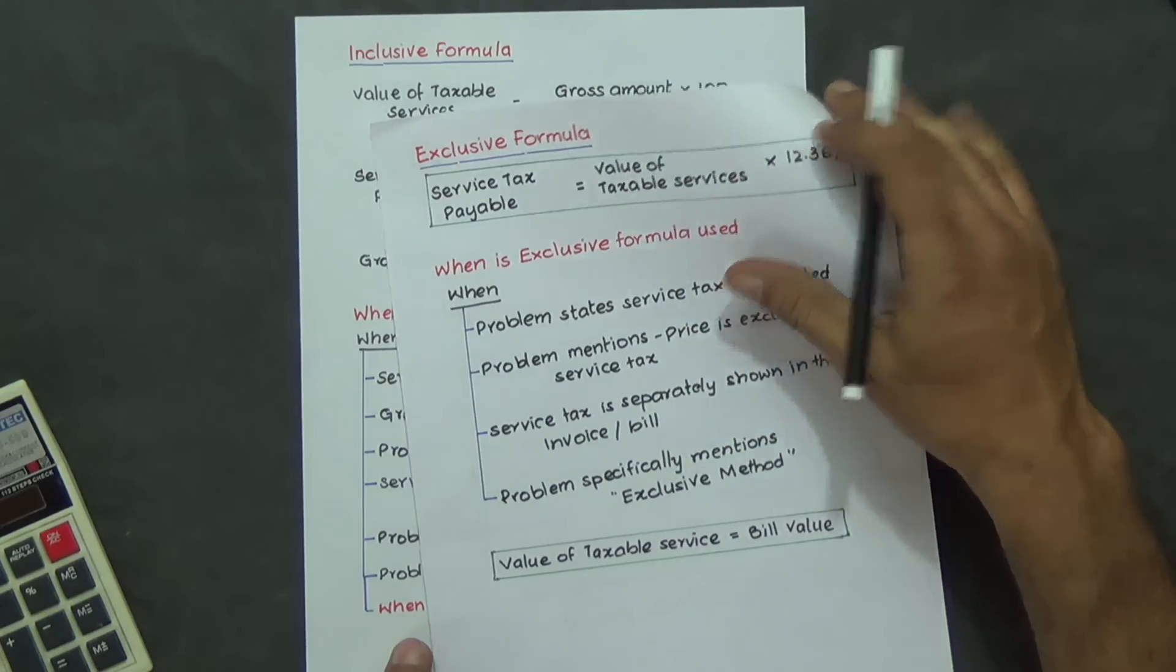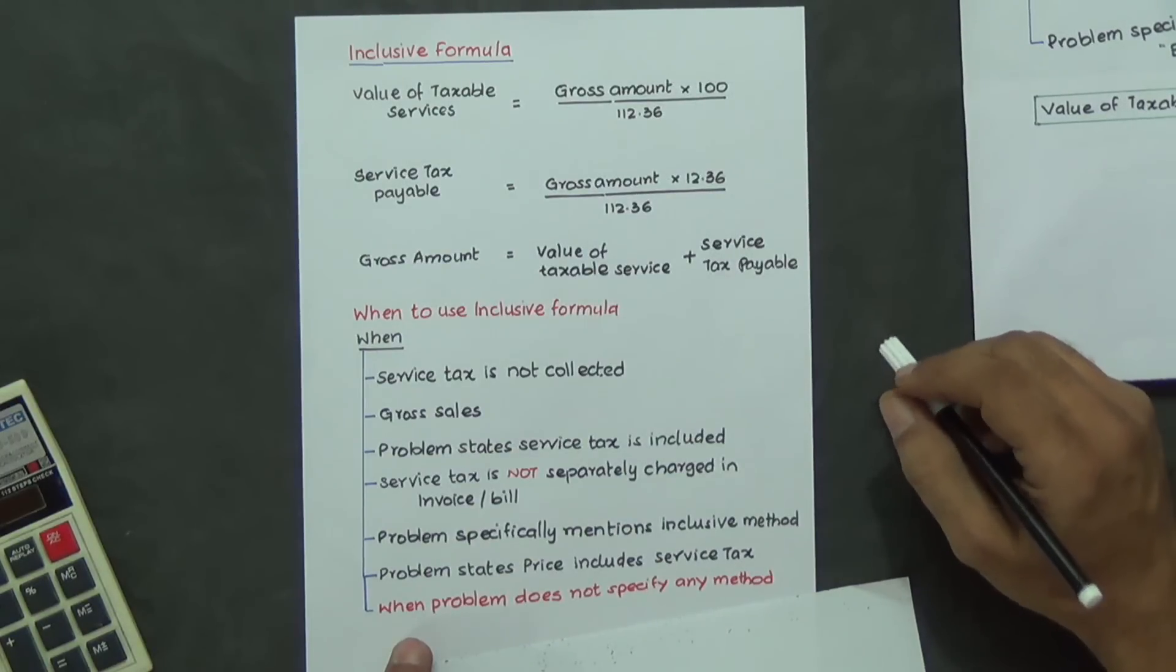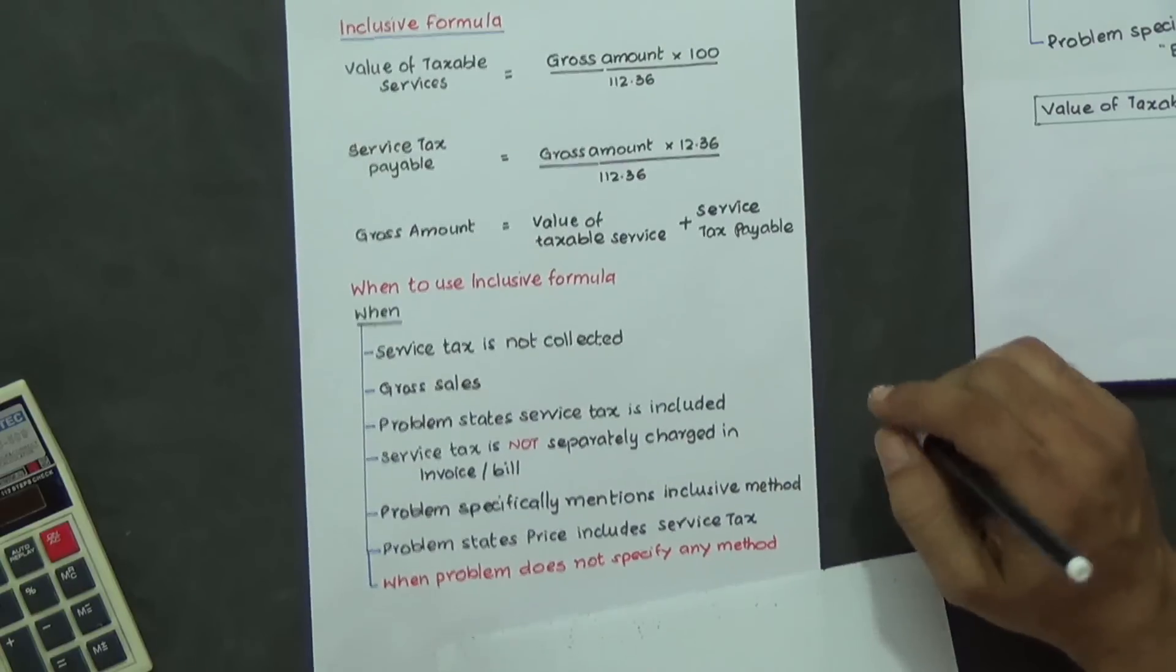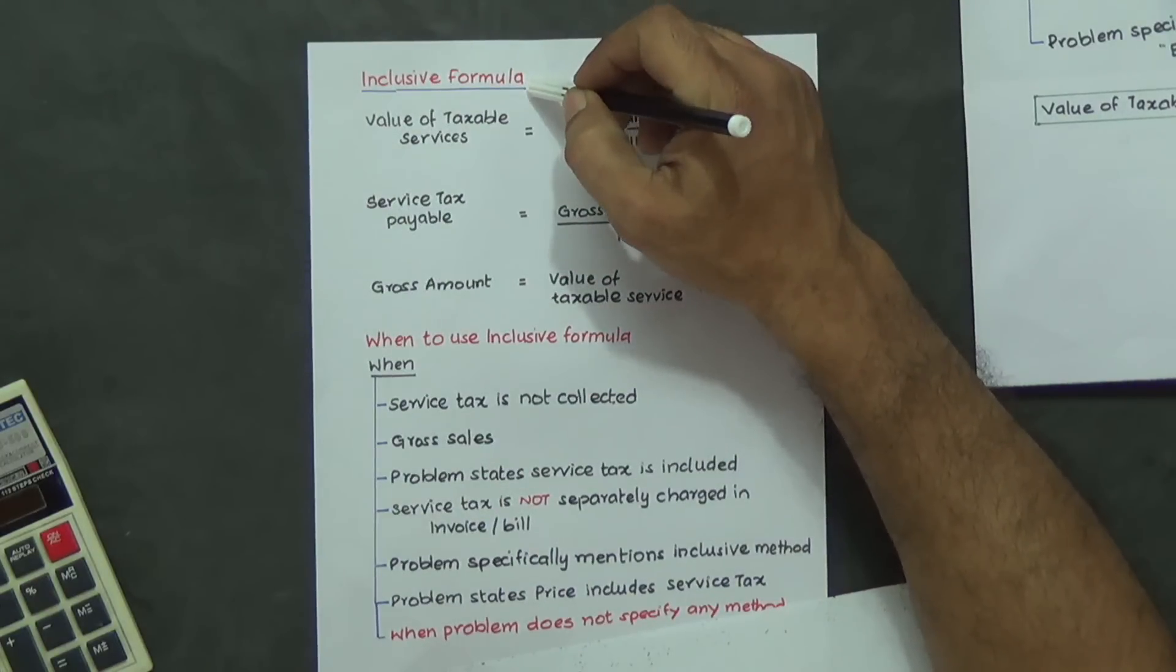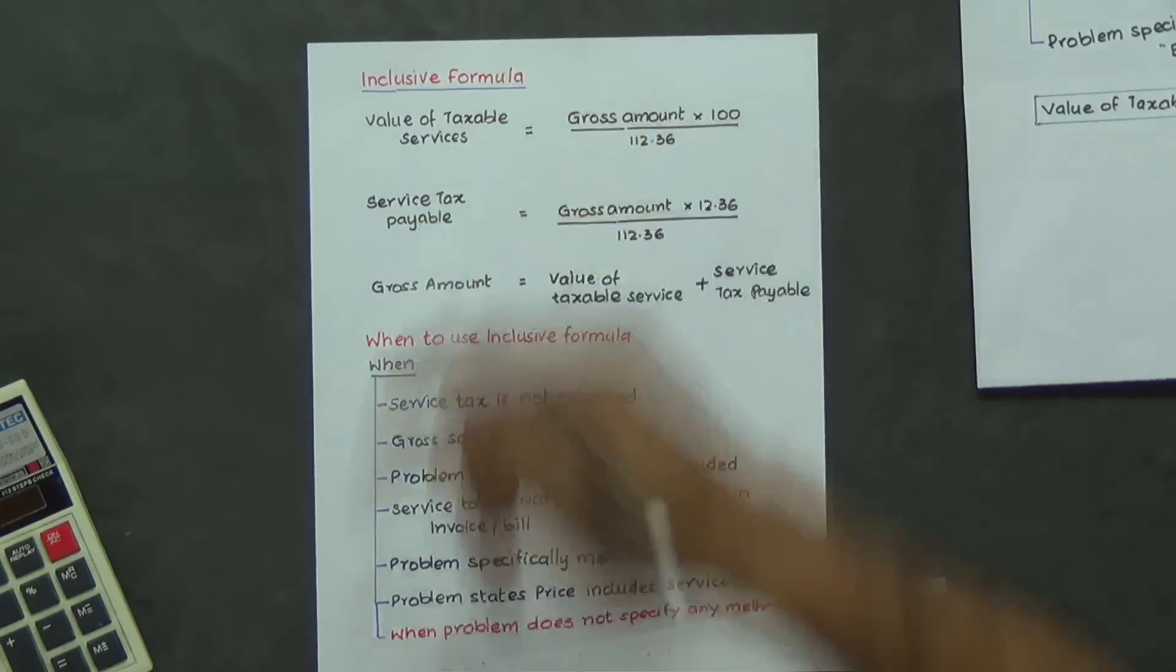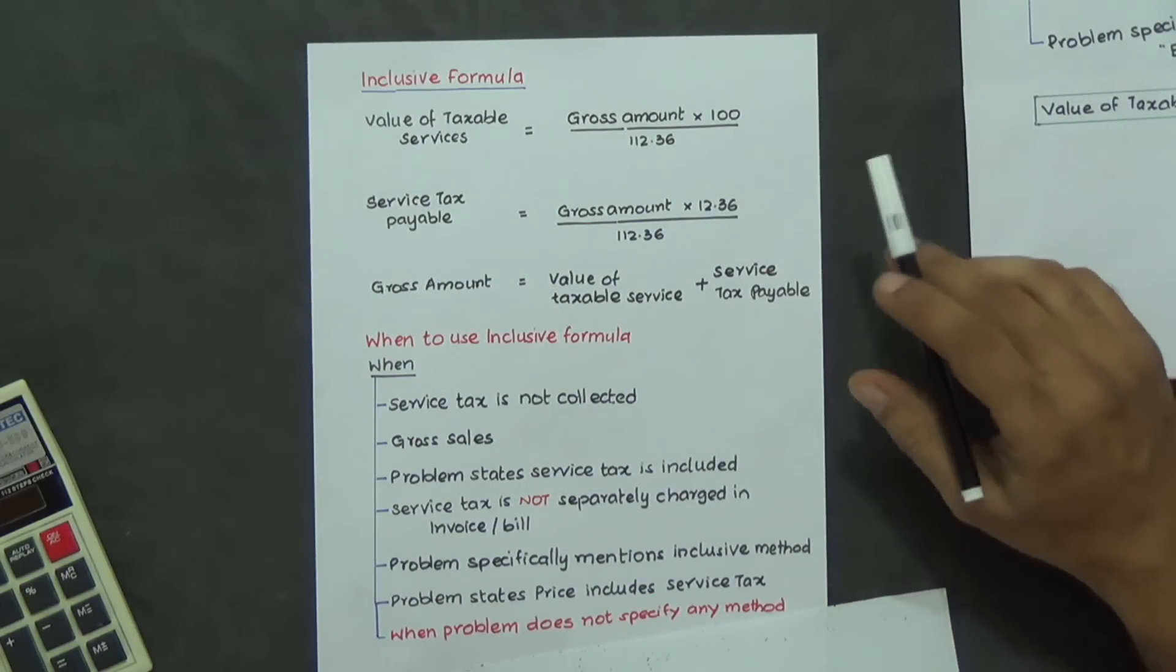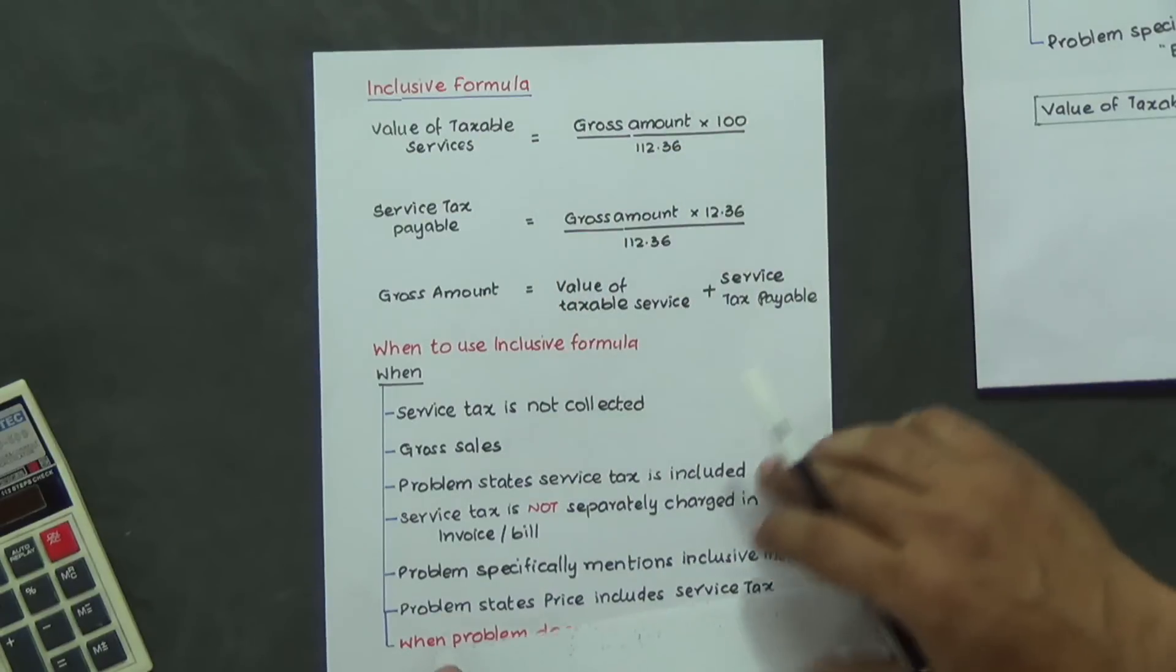But recently, in the Bangalore University workshop, what has been conducted, it has been decided that if the problem is silent, inclusive formula is to be used. Since it has been given as a directive by the Bangalore University, follow this formula. Please don't go by any textbooks. You're writing your answers for Bangalore University.